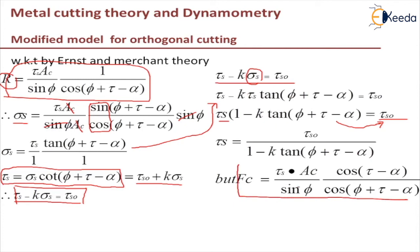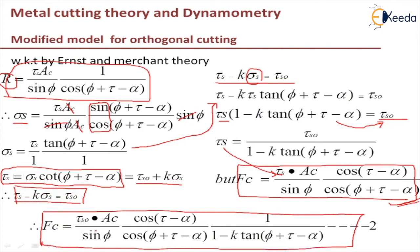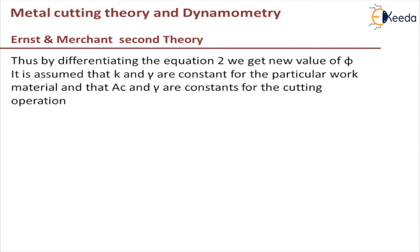From the first theory, the cutting force fc = τs·ac·cos(τ − α) / [sin φ · cos(φ + τ − α)]. Plugging in the new τs value, the new equation for fc becomes: fc = τs₀·ac·cos(τ − α) / [sin φ · cos(φ + τ − α) · (1 − k·tan(φ + τ − α))]. Work done is fc times vc. Differentiating with respect to φ gives the minimum work done condition.